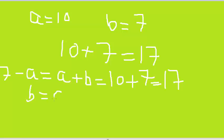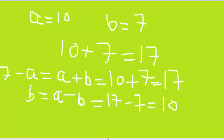Next we do B equals A minus B. A is now 17 and B is 7, so we get 10. Now the value has started to swap. Let me show you — B should become 10 after swapping.